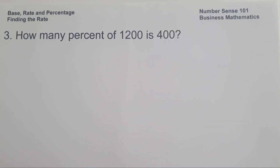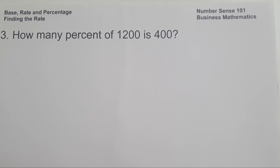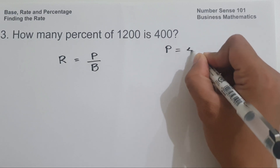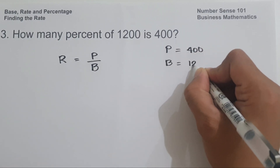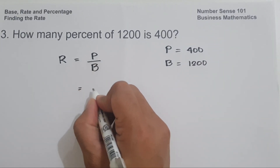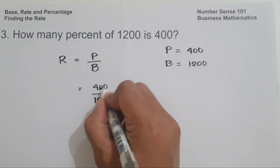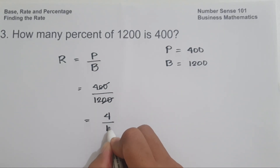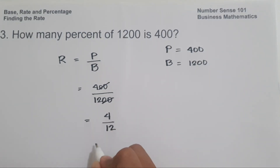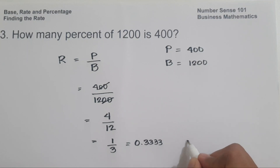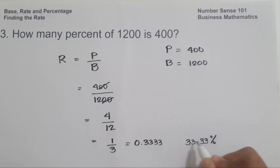On example number 3: How many percent of 1,200 is 400? To find the percent, let us use the formula: rate equals percentage divided by base. So percentage is 400 and base is 1,200. We have 400 divided by 1,200. Let us cancel the two zeros, giving us 4 over 12. And 4 over 12 in simplest form is 1 third. And 1 divided by 3 is 0.3333. Written in percentage, this is 33.33%. And this will be our answer.